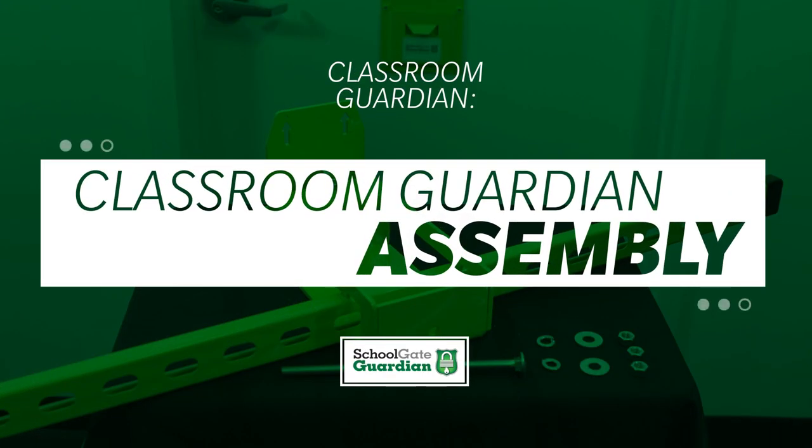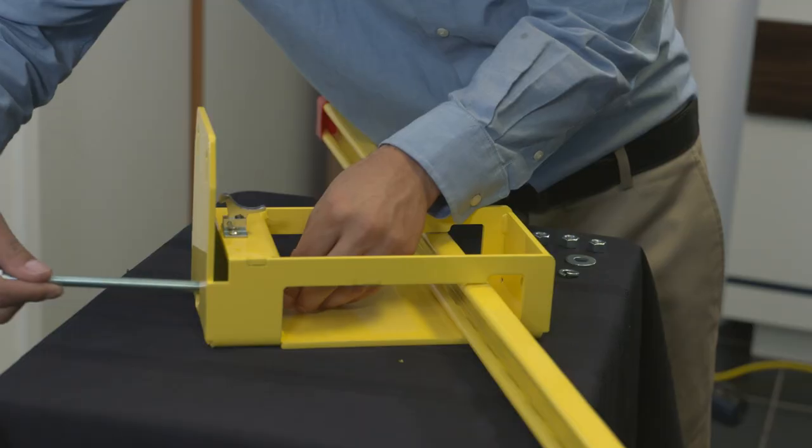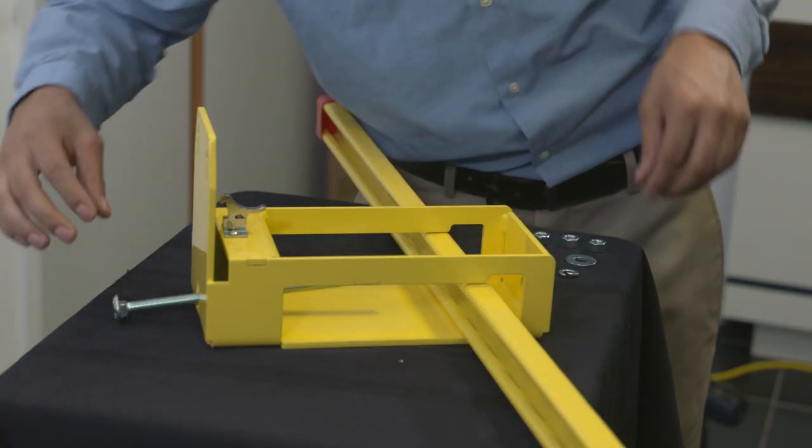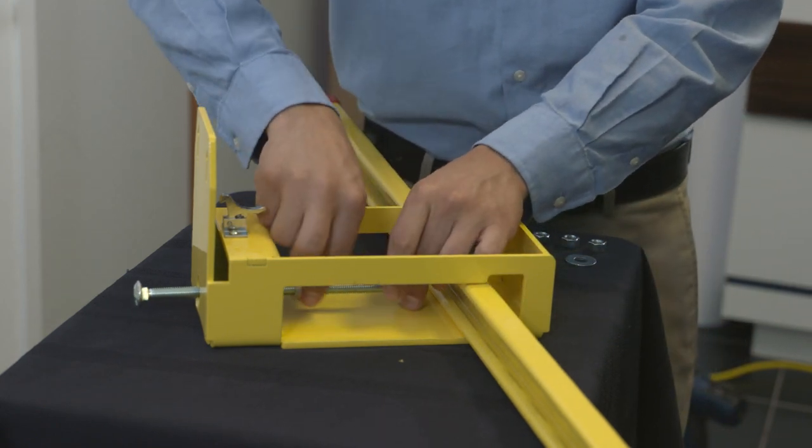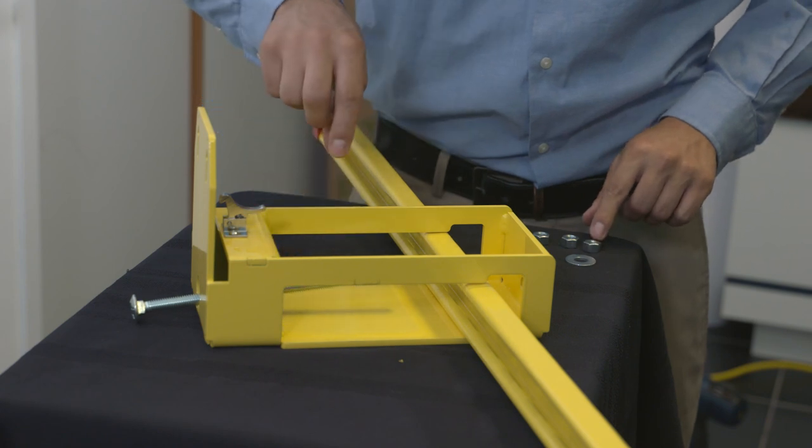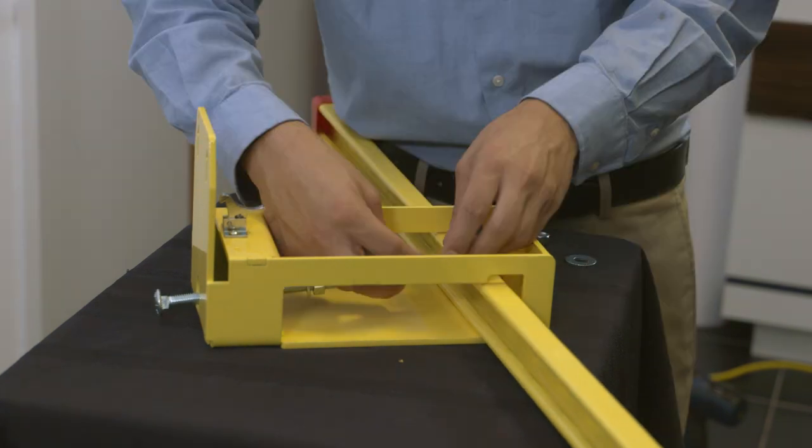Classroom Guardian Assembly - Step 1. Slide Unistrut back against endplate. Insert bolt through locking plate halfway into the Classroom Guardian. Insert one lock washer onto the bolt close to the lock plate end. Spin nut 1 onto bolt with finger. Spin nut 2 onto bolt with finger.